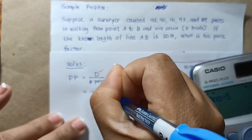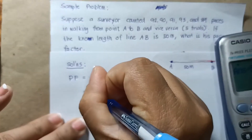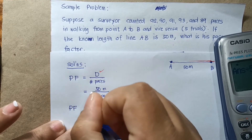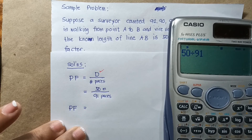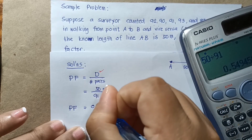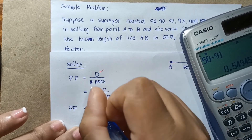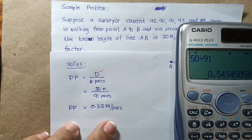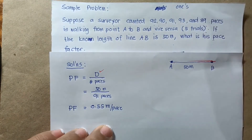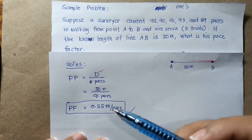Substituting into the formula: the known length is 50 meters and the number of paces is 91. Therefore, the pace factor of the surveyor is equal to 50 divided by 91, which equals 0.55 meters per pace, or about 55 centimeters per pace. Note that the unit of pace factor is meters per pace, because it represents the length of one pace — the length of one step of the surveyor.